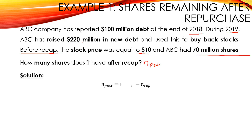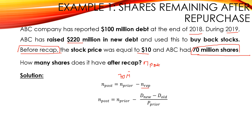We know that N post is equal to N prior minus N repurchase. N prior is the number of shares before the recap. As given in the exercise, before recap ABC had 70 million shares. So it's 70 million shares minus N repurchase. To calculate N repurchase we will use the formula: D new minus D old over P prior.